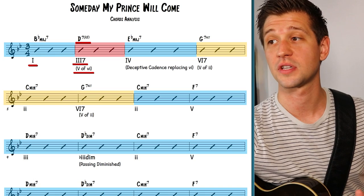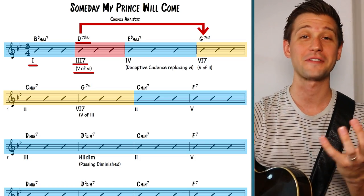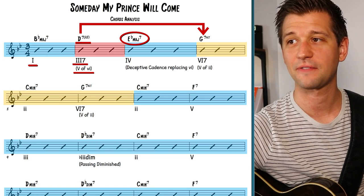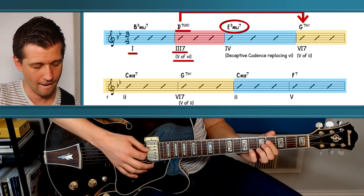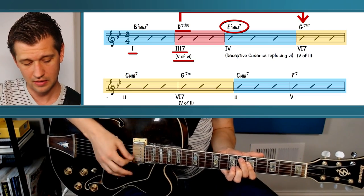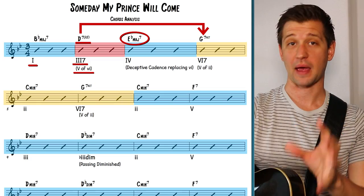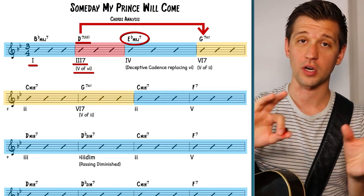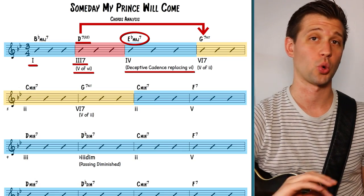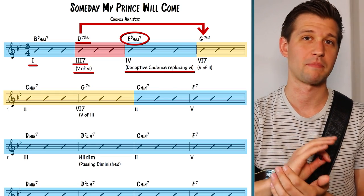In 'Someday My Prince Will Come,' instead of resolving to G minor seven, it actually resolves to another secondary dominant — the dominant sixth chord — with an E flat major seven in the way. That E flat major seven sharp eleven leads into the dominant sixth chord. When a chord resolves to something unexpected — that wouldn't normally follow from the preceding chord — we call this a deceptive cadence. It's temporarily replacing the sixth chord. This is a helpful label for a set of chord progressions that may confuse you at first.